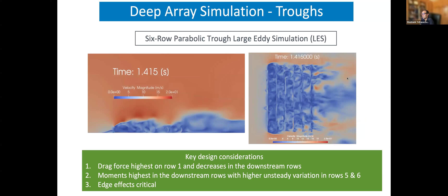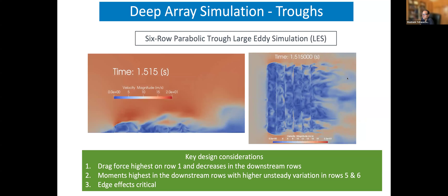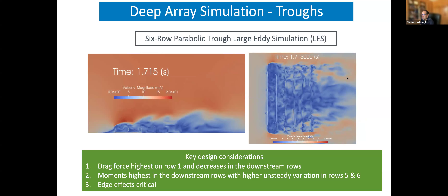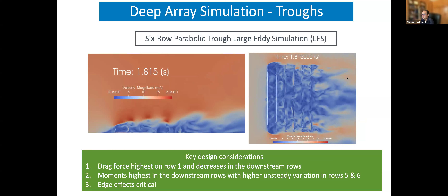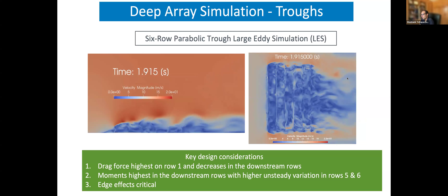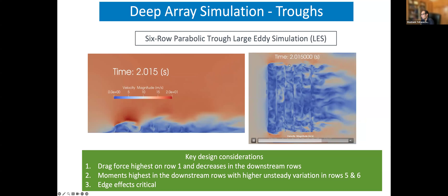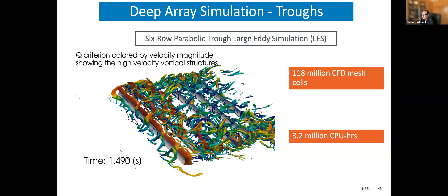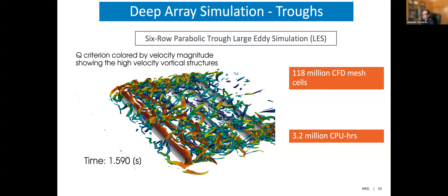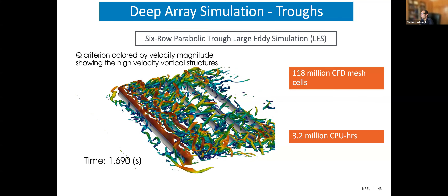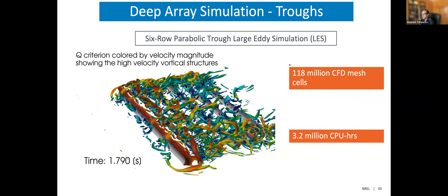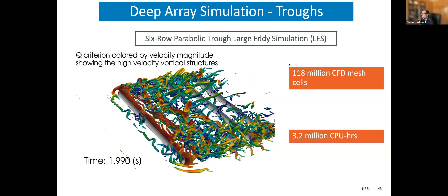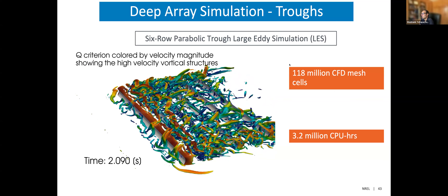I want to quickly highlight some of the simulation work. In 2019, I looked at a six-row parabolic trough using large-scale CFD simulation — very detailed analysis at much higher resolution in space and time. Key findings included drag force highest in row one decreasing downstream, moments higher in downstream rows with higher unsteady variation, and critical edge effects. However, this simulation needed 120 million CFD cells, and the entire simulation computing 8 seconds of flow required 3.2 million CPU hours on one of the largest supercomputers EERE has — not usable by industry.